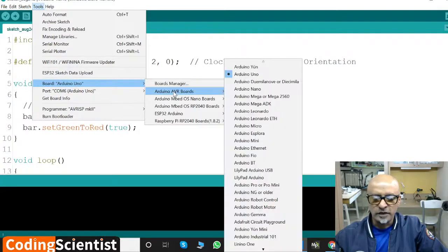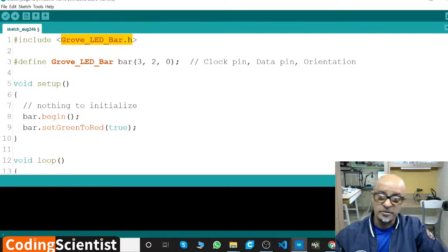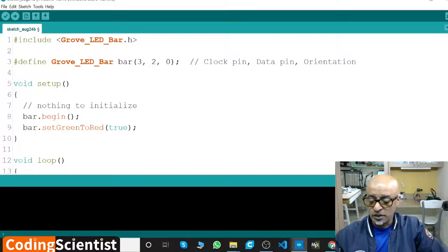Under AVR Boards, select Arduino Uno. Then go to Tools again, go to Port. My port is COM6. Yours might be different. Go ahead and upload.